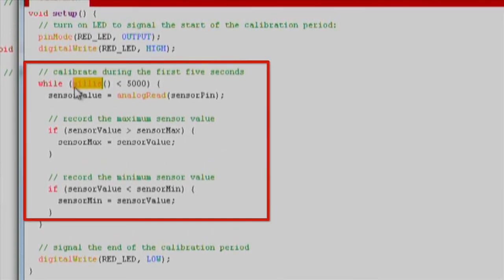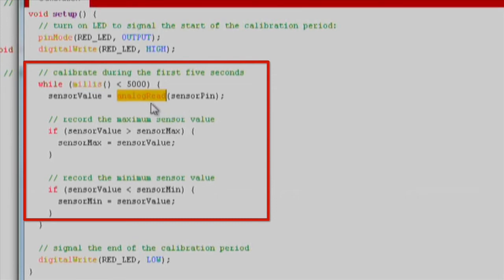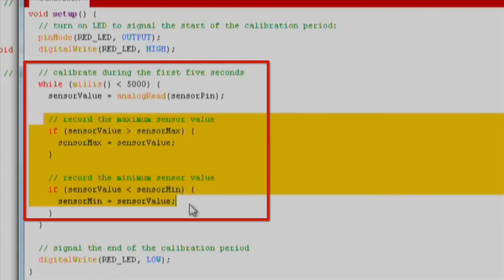During calibration, we use the analog read function to read the instantaneous outputs of our photodiode. We use a few if statements to see if the latest reading is higher than our existing max value, or lower than our existing min value.